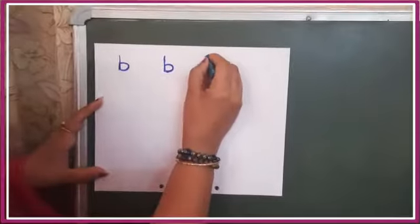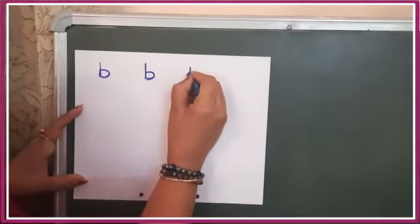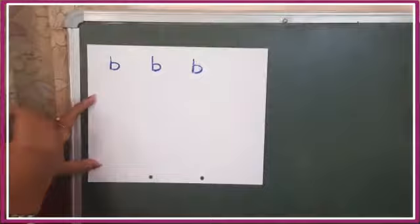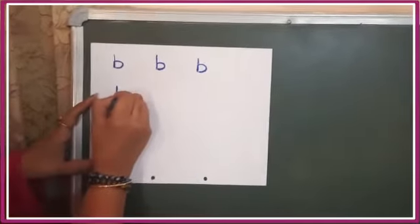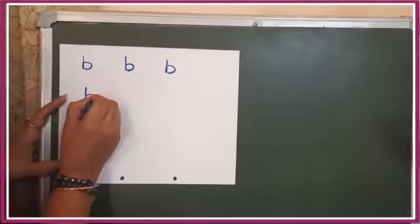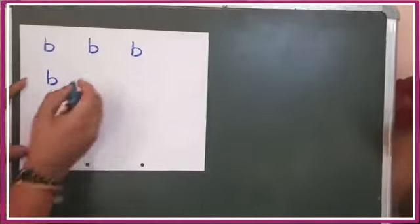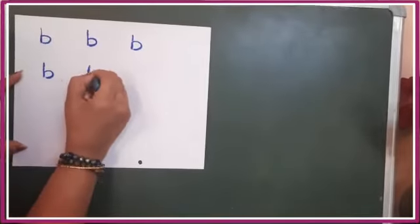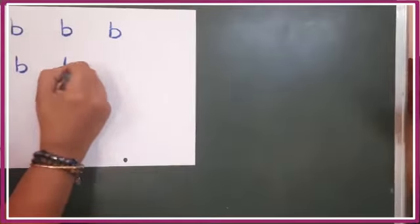Make a standing line and a curve. This is the letter B. Standing line and a curve. Standing line and a curve like this.